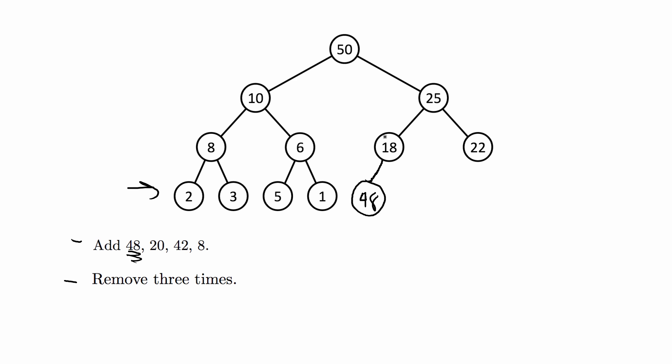Then basically what you do is just swap the values until it's in the correct position. 48 is going to end up here at the end. That means we're going to swap the 18 to go down here and the 25 to go here. That's going to be the new tree and we're done with 48.